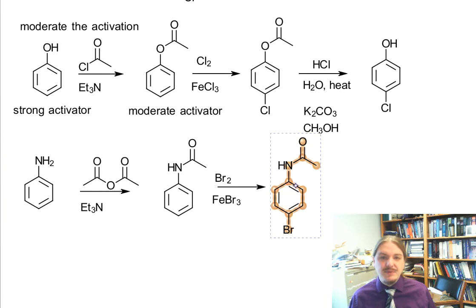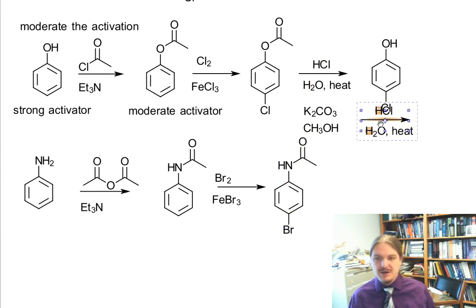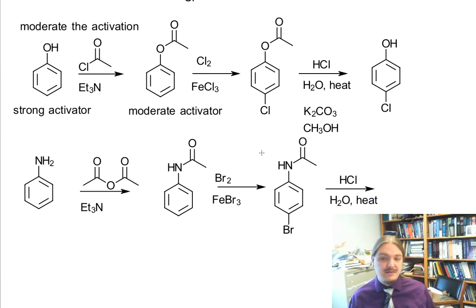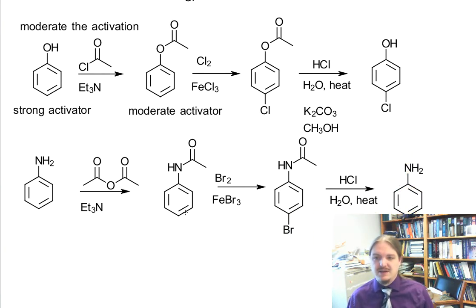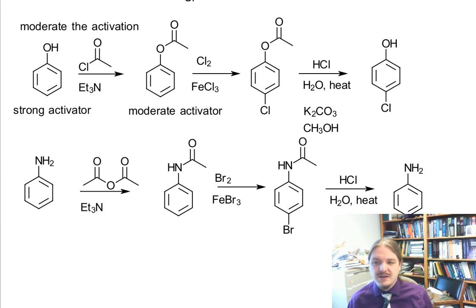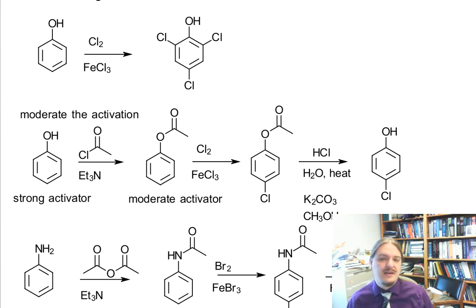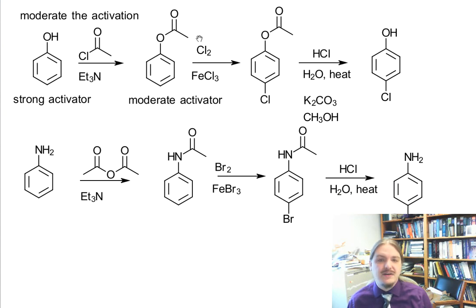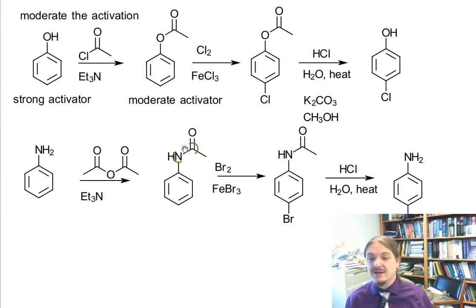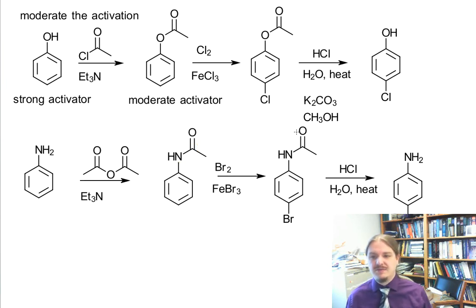The amide can be removed by acidic hydrolysis, and is a little bit less likely to be removed by basic hydrolysis. So in this video, I shared a strategy to avoid the type of overreaction that can occur with a strong activator. You moderate that activation by acylating the oxygen or nitrogen, making the ester or amide, which is a moderate activator, do the electrophilic aromatic substitution, then hydrolyze the ester or amide back to the original phenol or aniline. Thank you for watching.